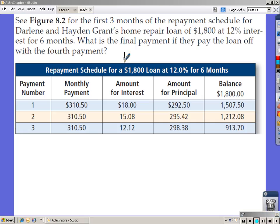R equals your interest rate, 12%, so 0.12 divided by 12 is 0.01. In order to find the payoff, we've got to find the interest that is owed on the 913.70.